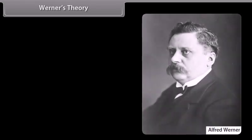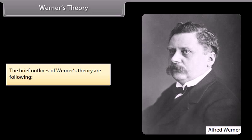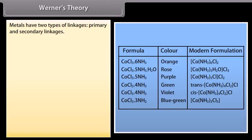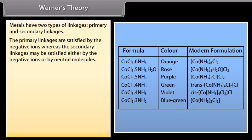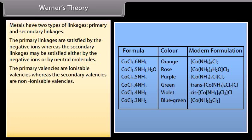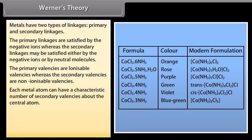Werner's Theory. In 1893, Alfred Werner successfully explained the properties of coordination compounds in terms of their structure. Metals have two types of linkages: primary and secondary. The primary linkages are satisfied by the negative ions, whereas the secondary linkages may be satisfied either by the negative ions or by neutral molecules. The primary valencies are ionizable, whereas the secondary valencies are non-ionizable. Each metal atom can have a characteristic number of secondary valencies, which are projected in space to assign a definite geometry to the coordination compound.